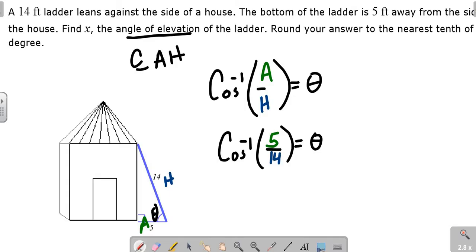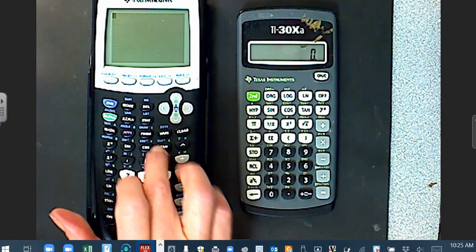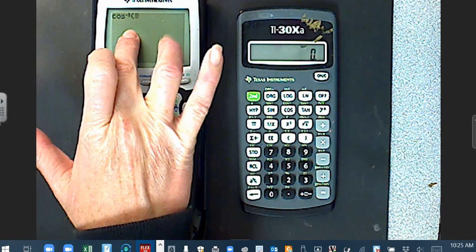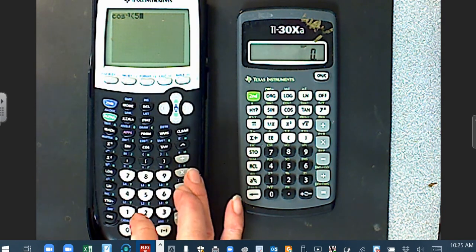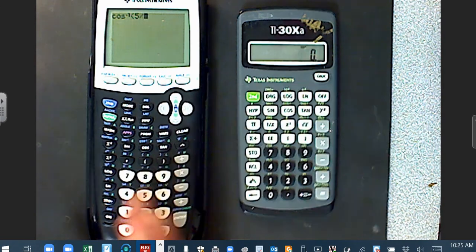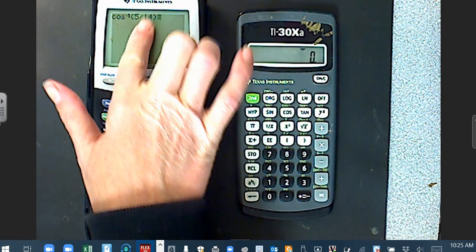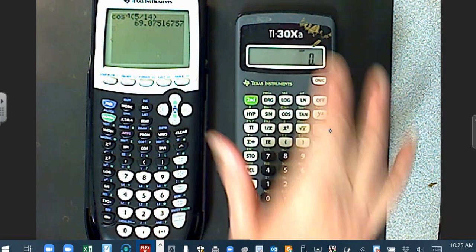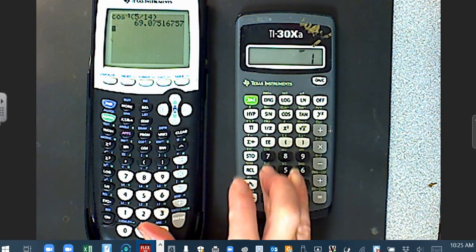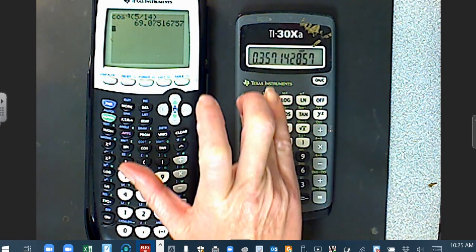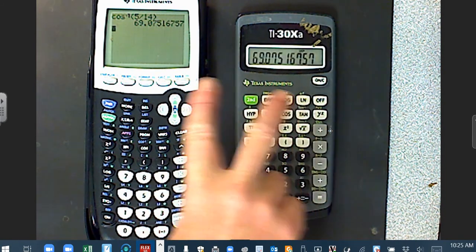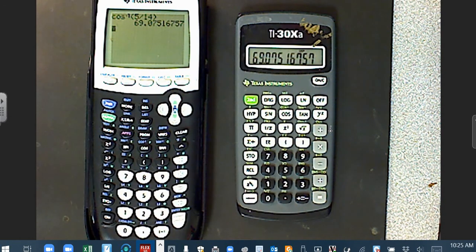Coming over here, that's going to be 5 over 14, inverse cosine. Second function cosine, 5 divided by 14, enter. Over here, you do 5 divided by 14 equals second function cosine. You're going to get the same thing. Says rounded to the tenth, 69.1.